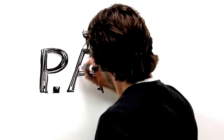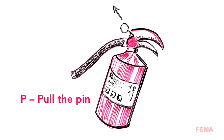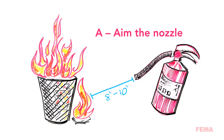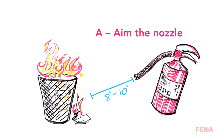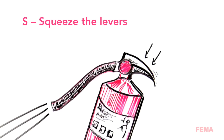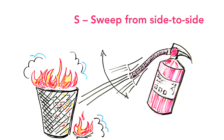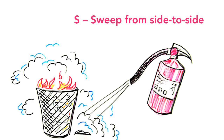Once you've determined that the extinguisher is the correct type for the hazard, proceed to operate the extinguisher using the PASS technique to control and extinguish the fire. First, hold the extinguisher upright and pull the pin. Next, stand 8 to 10 feet from the fire and aim the nozzle at the base of the fire. Do not get too close or aim the nozzle too high. Once the nozzle is aimed at the base of the fire, squeeze the levers together to begin discharge of the fire extinguishing agent. Maintain your distance from the fire and sweep the nozzle from side to side, sweeping 3 to 6 inches beyond the right and left edges of the fire. Discharge the extinguisher until contents are exhausted to prevent re-ignition.